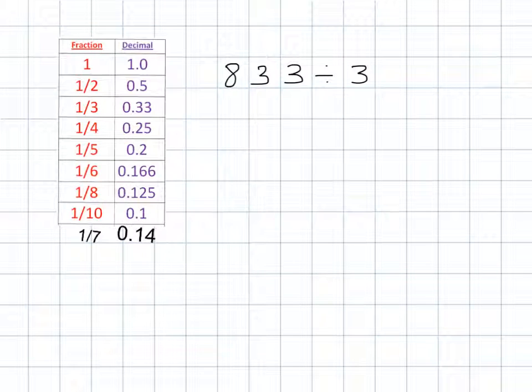In this example, we're going to divide 833 into 3. We'll find the remainder as well and convert that remainder into a fraction and then into a decimal. Let's do it with the bus stop method. We're dividing by 3 so the 3 goes on the left-hand side of the bus stop and 833 goes below it.